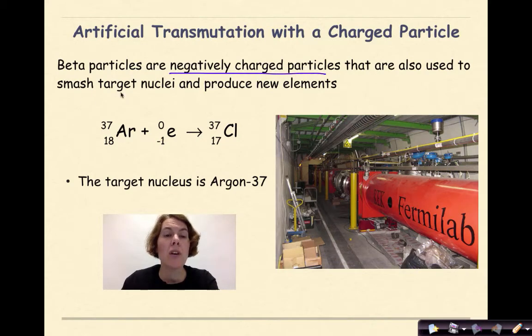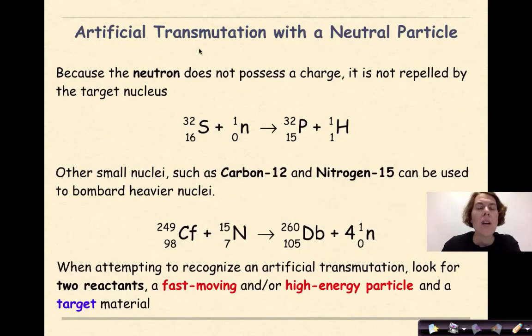The same thing can happen with beta particles. So beta particles are negatively charged particles that are also used to smash target nuclei and produce new elements. For example, we have argon-37 colliding with this beta particle right here and forming chlorine-37. The target nucleus is argon-37.